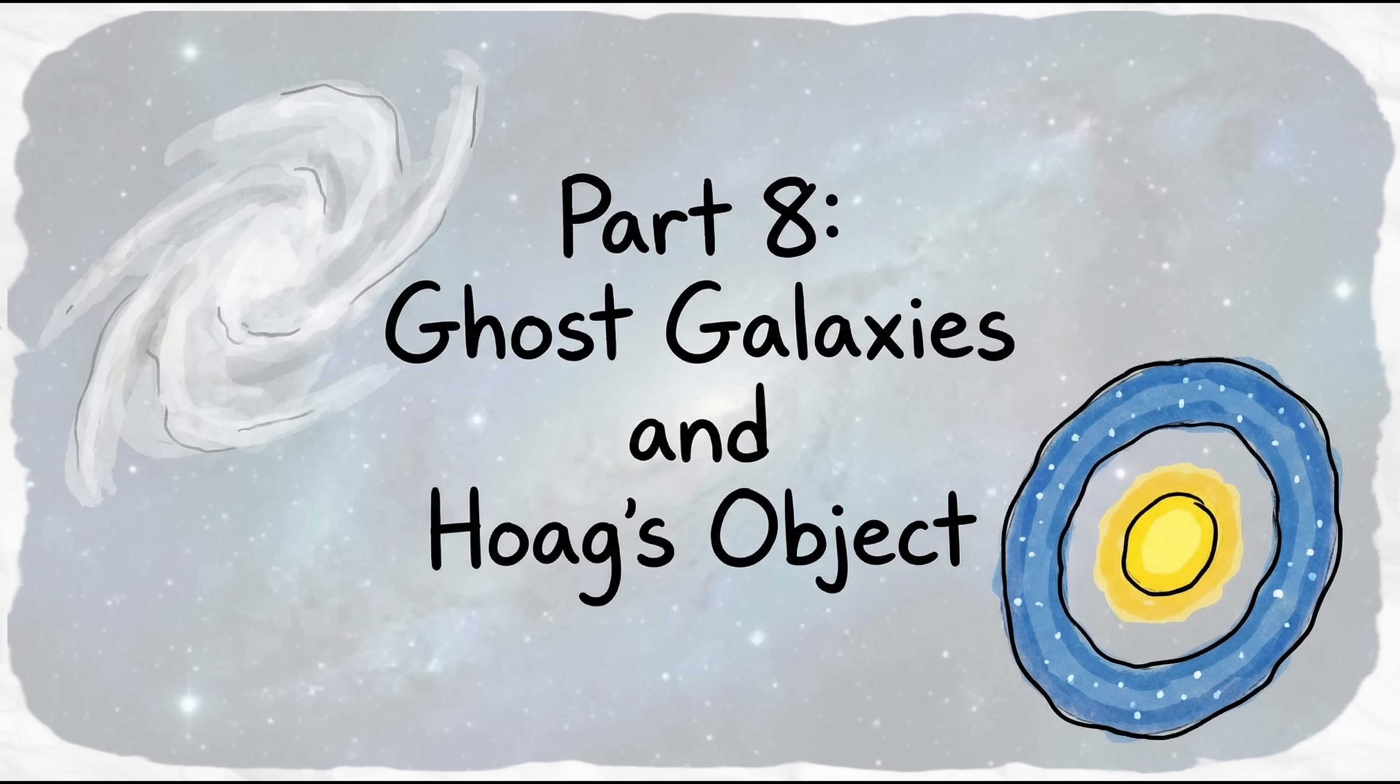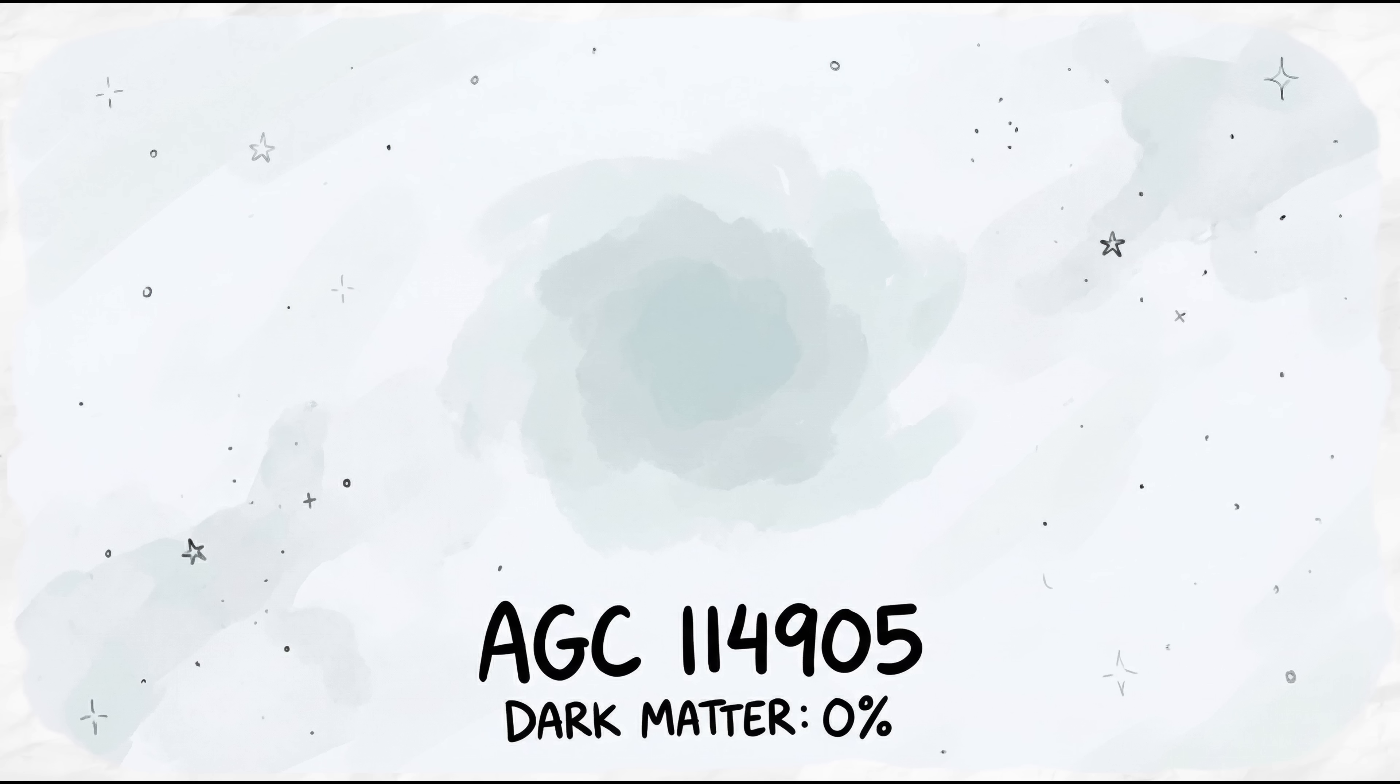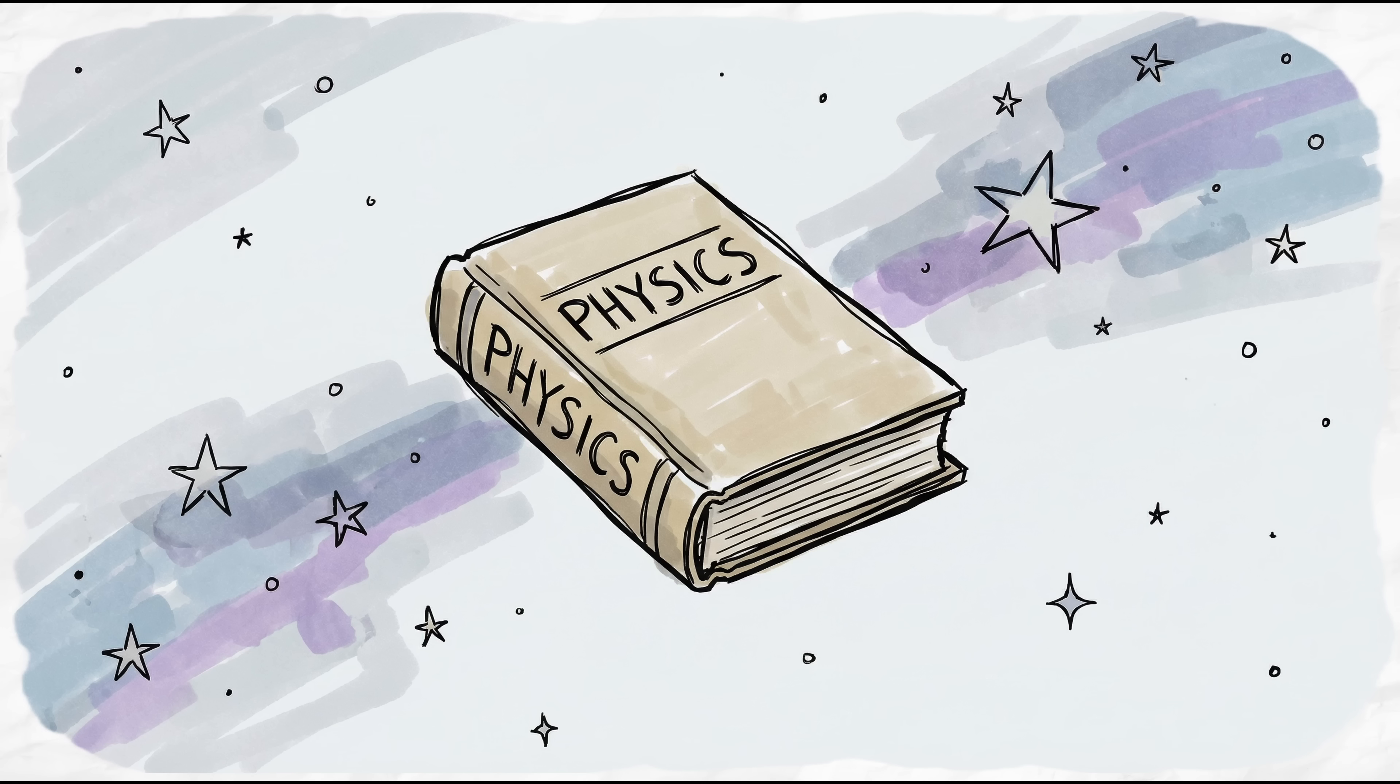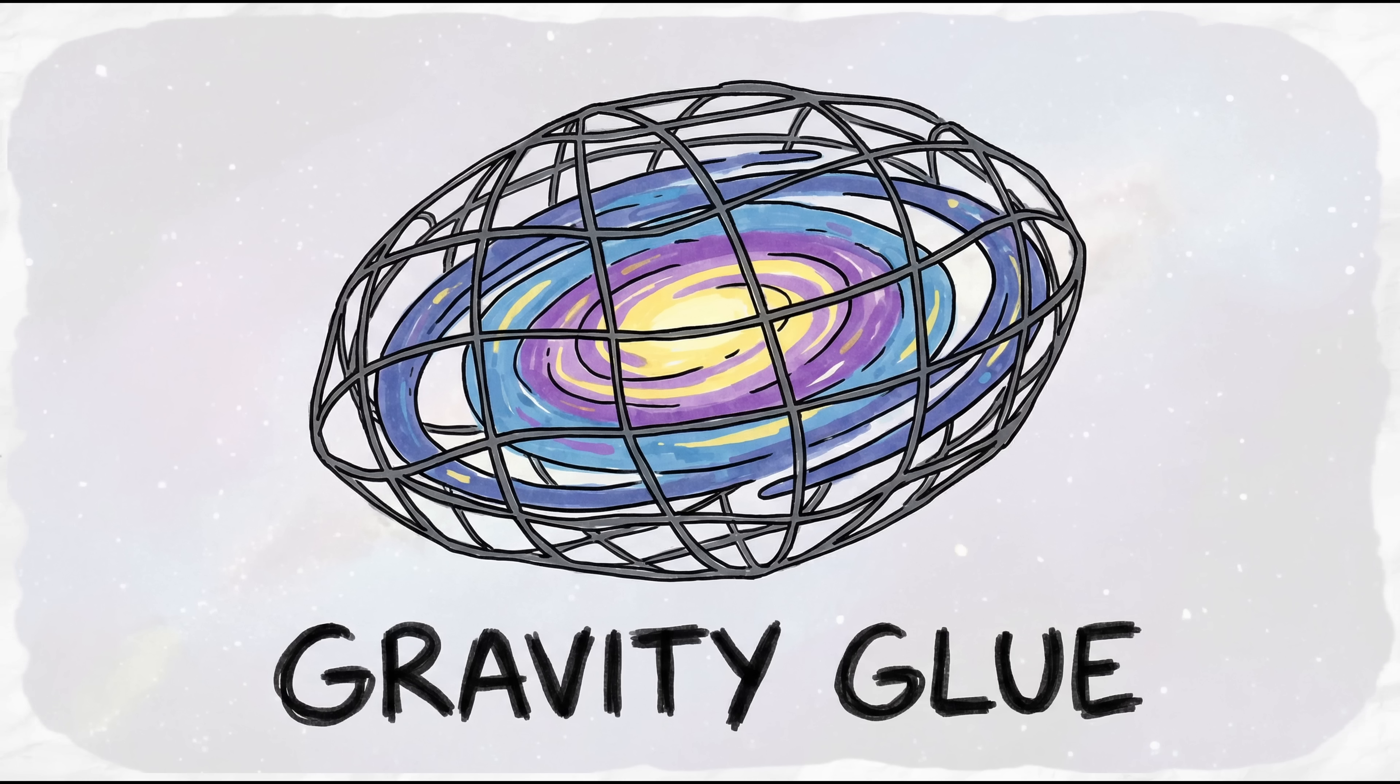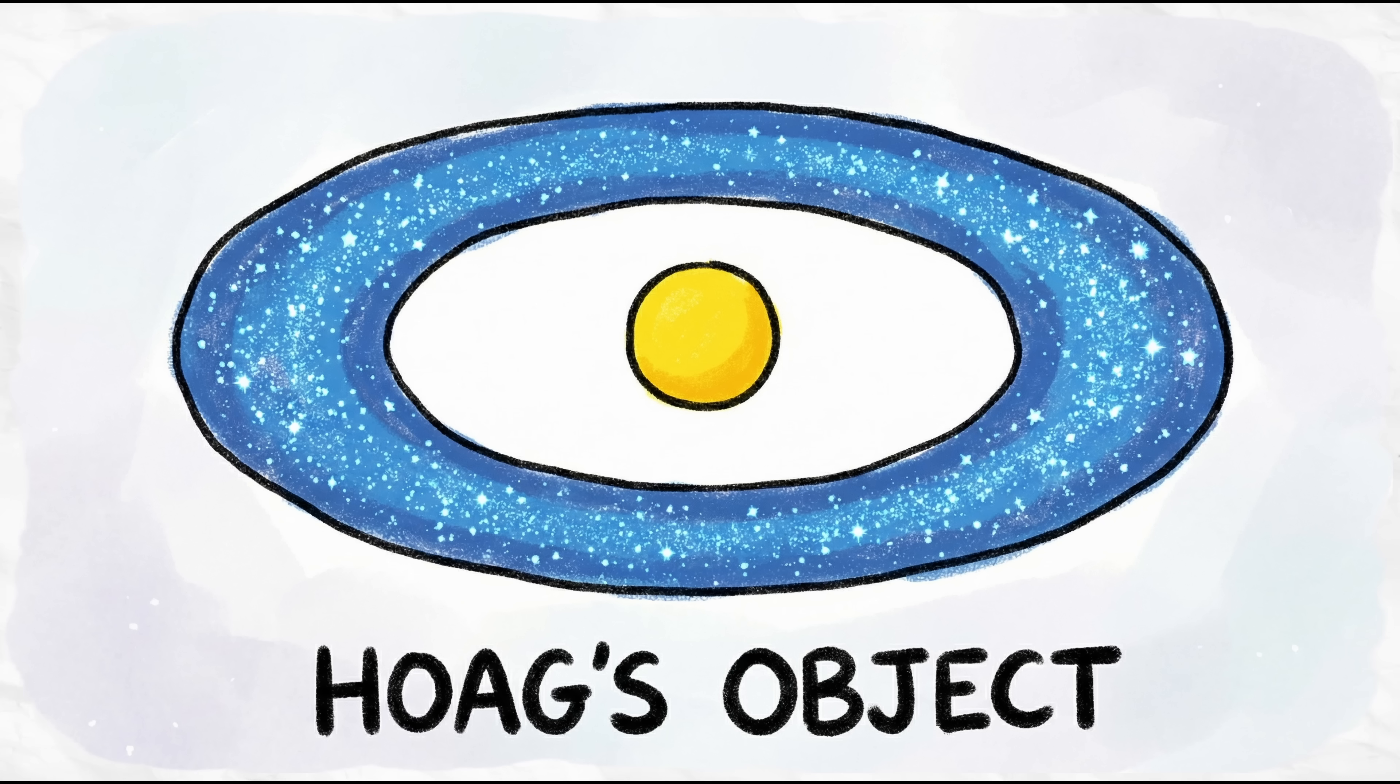Part 8. Ghost Galaxies and Hoog's Object. We've also found glitches in how galaxies are put together. Take AGC 114905. It's a galaxy the size of the Milky Way, but it seems to have absolutely no dark matter. Based on everything we know, you shouldn't be able to have a galaxy without dark matter acting as what holds the whole thing together. Finding a galaxy without it is like finding a skyscraper standing with no frame.